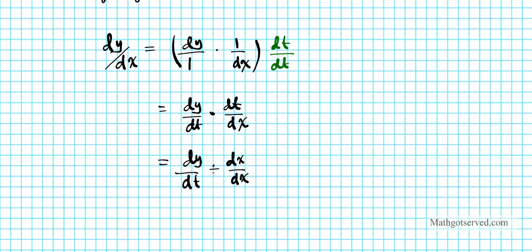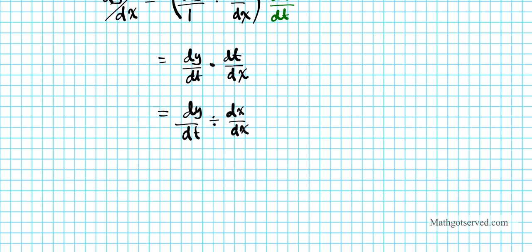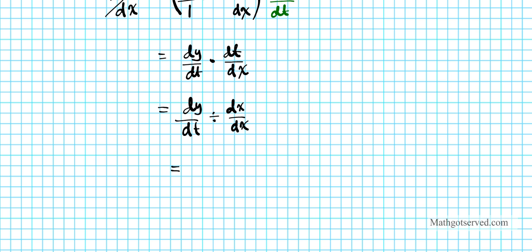Remember, division is multiplying the reciprocal. So I just changed this to division and reciprocated the expression. If I write this as a fraction, this is simply going to be dy/dt in the numerator divided by dx/dt. This is the formula for finding the first derivative of a function expressed in parametric form — parametric functions in two variables x and y.